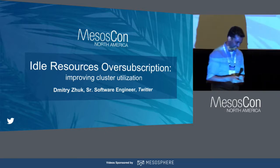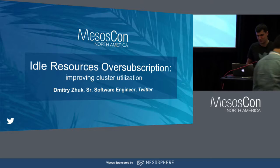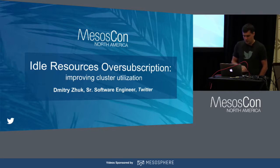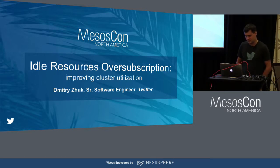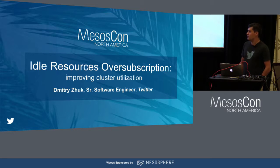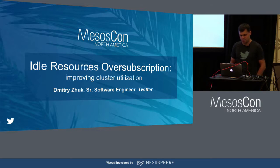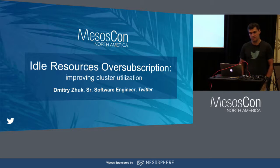Thank you. I work at Twitter compute platform team, which is basically responsible for running Aurora and Mesos on Twitter clusters. I'm going to introduce our solution to idle resources oversubscription, which we used to try to improve our cluster utilization. This is still work in progress — it's not deployed in production, but we thought it would be interesting to share our challenges and solutions with the community.